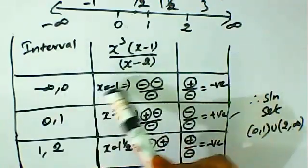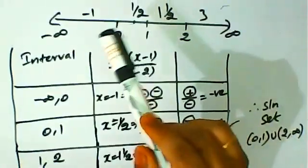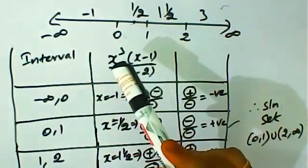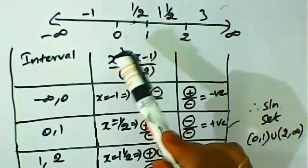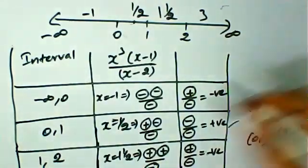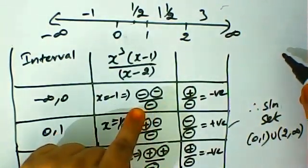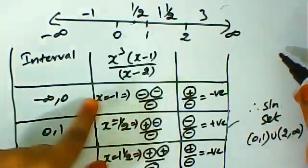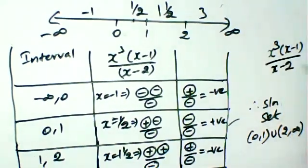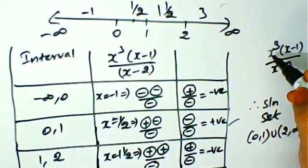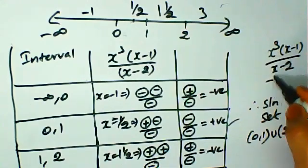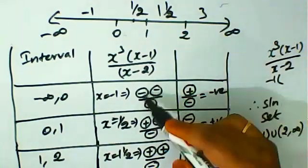For the interval minus infinity to 0, we choose x equals minus 1. We substitute into the equation and check the sign of each factor: x cubed gives minus 1, which is negative.